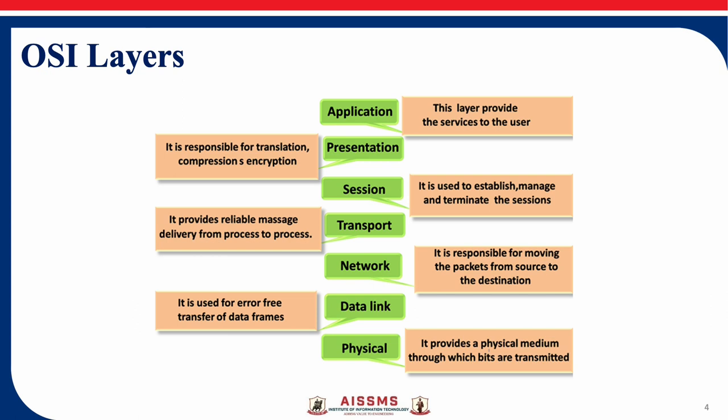The last one is the application layer. The application layer is used by end-user software such as web browsers and email clients. It provides protocols that allow software to send and receive information and present meaningful data to the user. A few examples of application layer protocols are HTTP (Hypertext Transfer Protocol), FTP (File Transfer Protocol), POP, SMTP, DNS, and others.